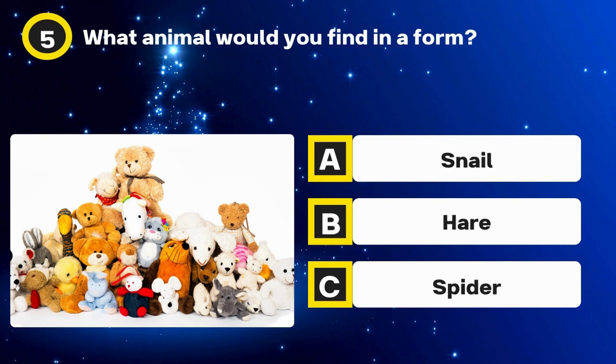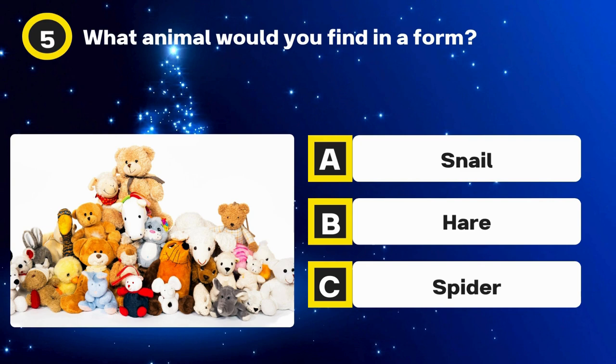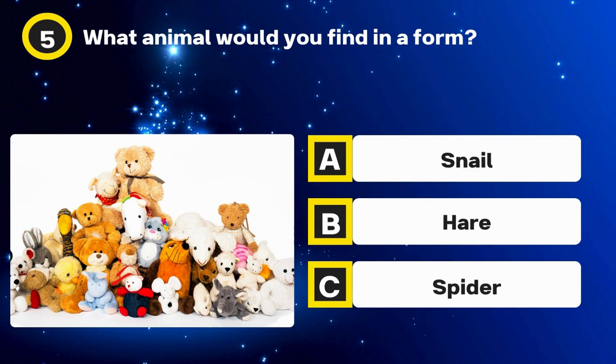Question 5. What animal would you find in a form? Options: Snail, Hare, Spider. The answer: Hare.